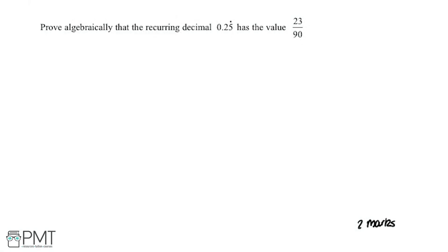We're going to take a look at this question that says prove algebraically that the recurring decimal 0.25 recurring has a value 23 over 90.